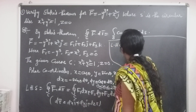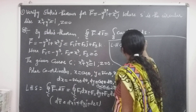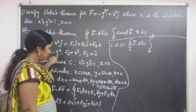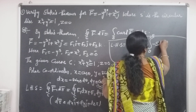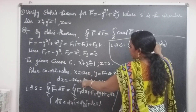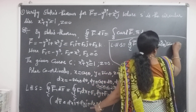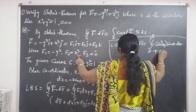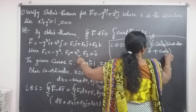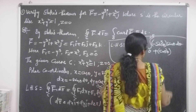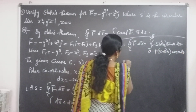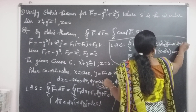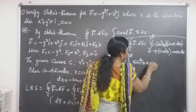LHS equals the line integral over closed curve C of F bar dot dr bar, which equals the integral from 0 to 2π of f1 dx + f2 dy + f3 dz. Substituting: f1 = −y³ = −sin³θ, dx = −sin θ dθ, f2 = x³ = cos³θ, dy = cos θ dθ. This gives the integral from 0 to 2π of sin⁴θ + cos⁴θ dθ.